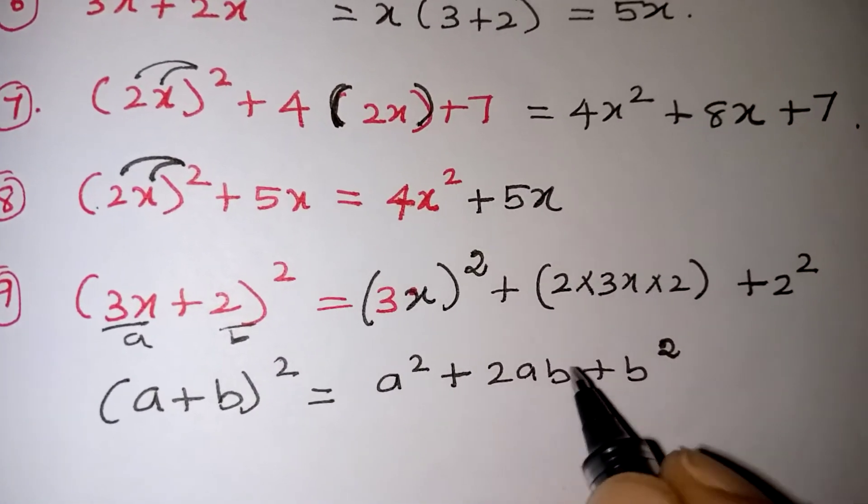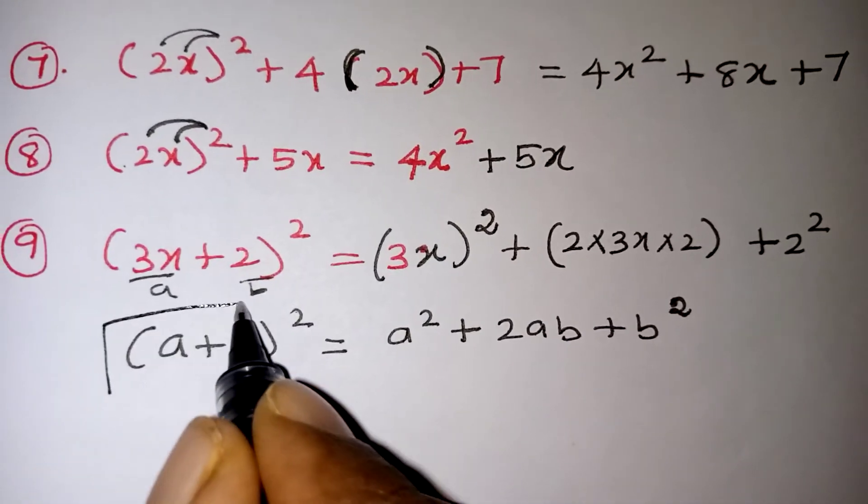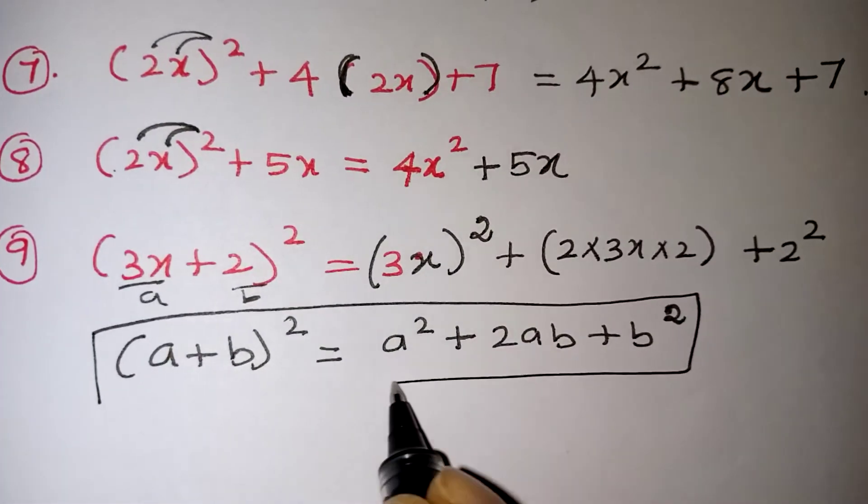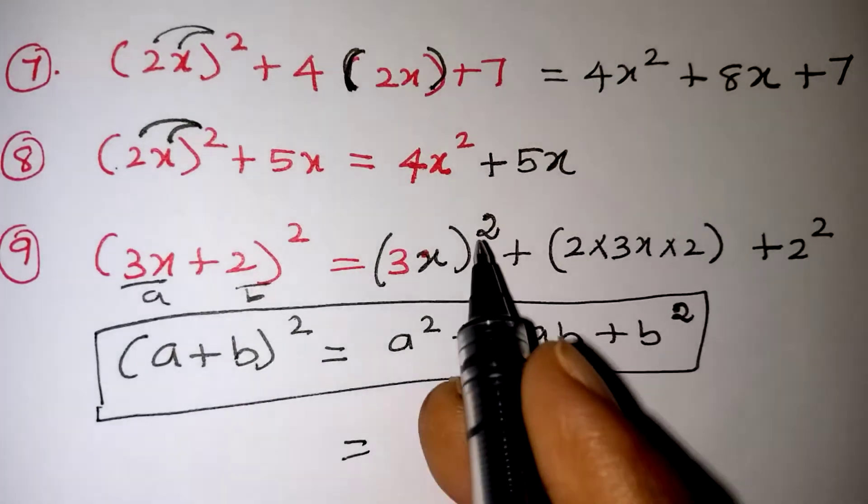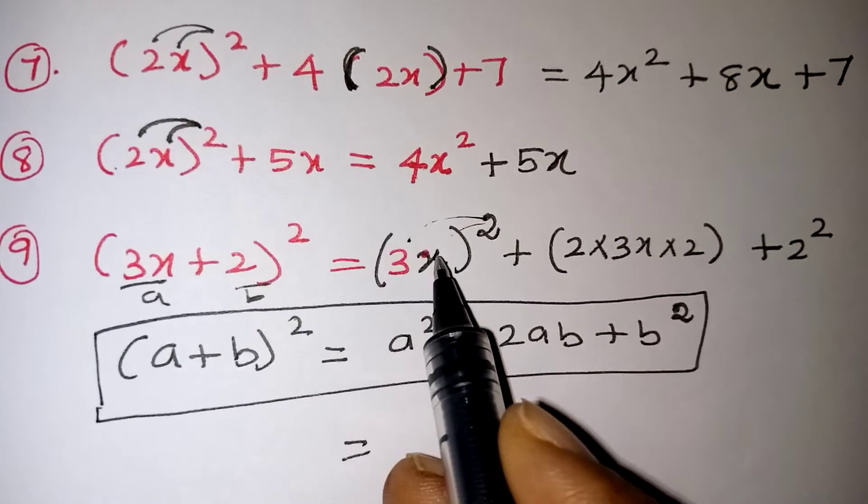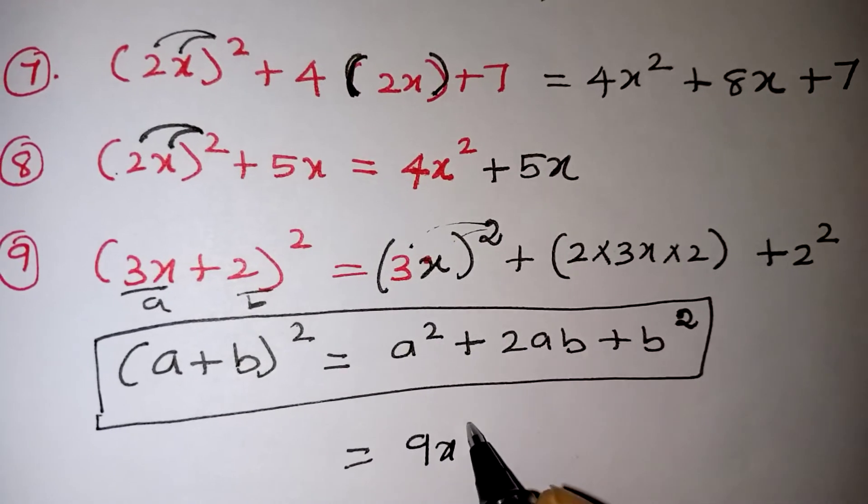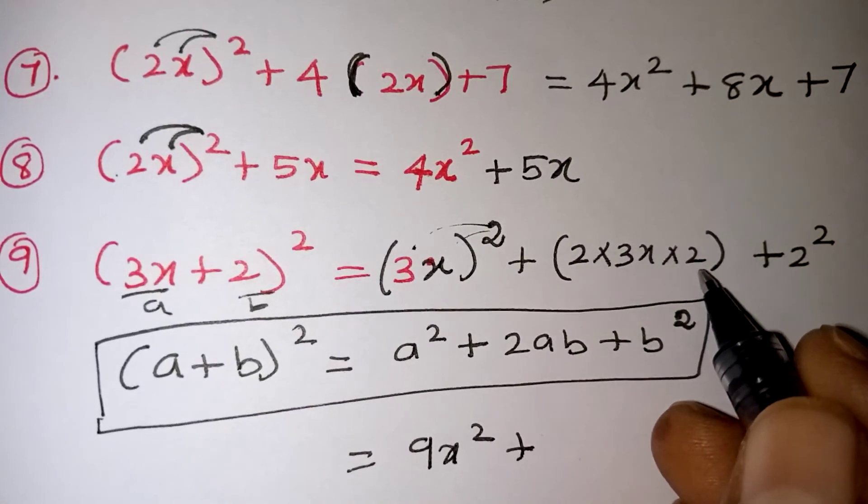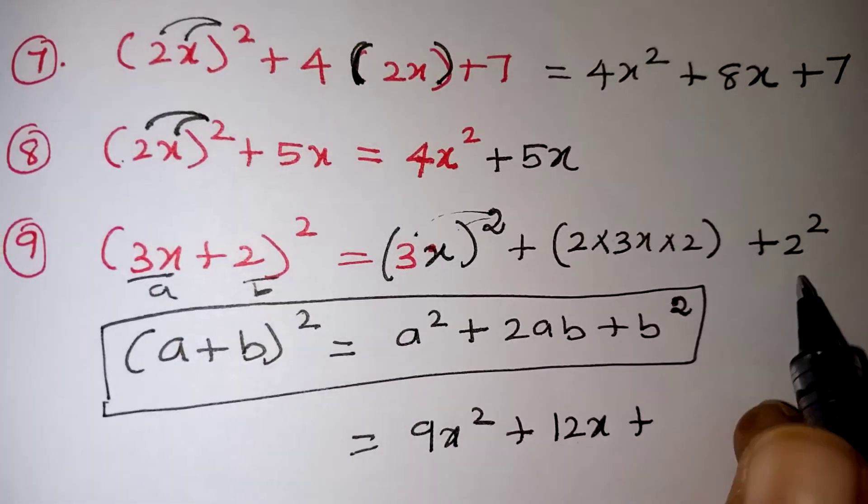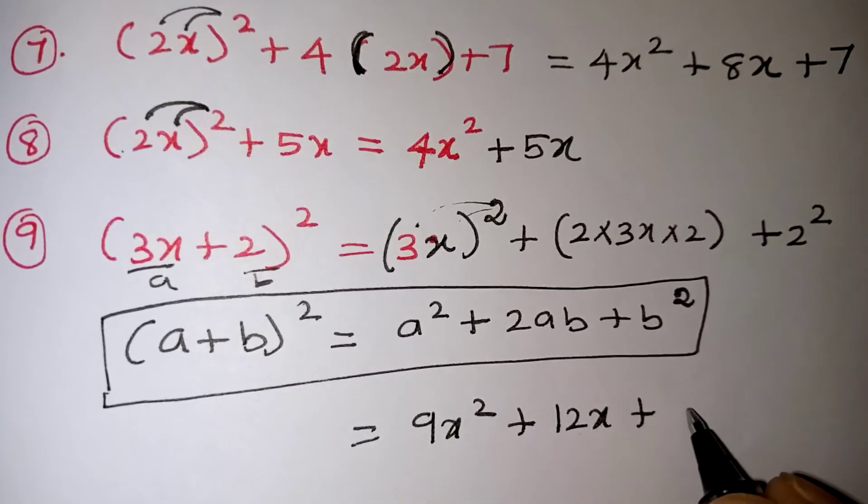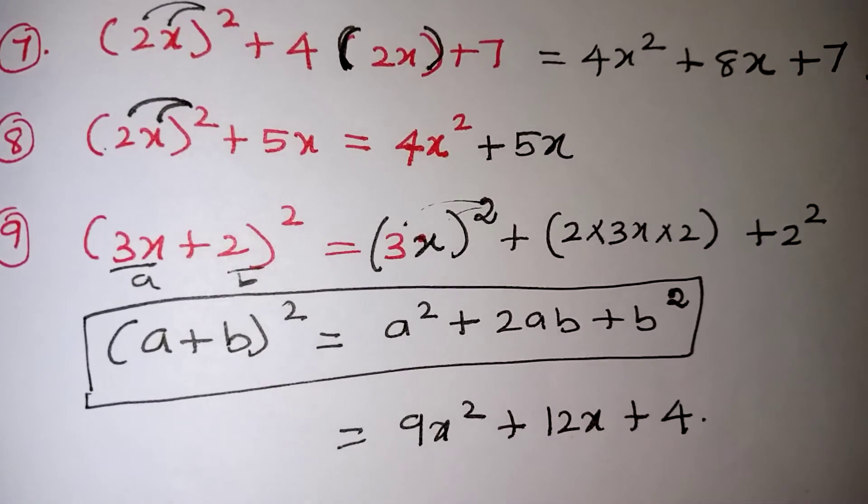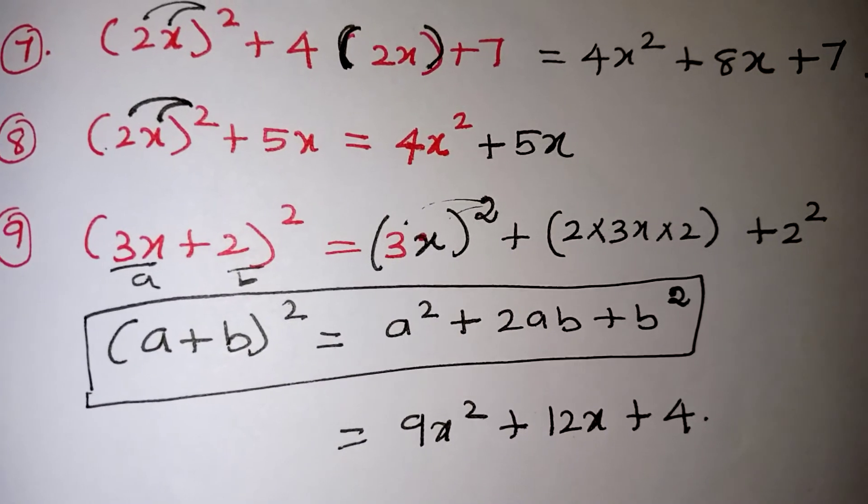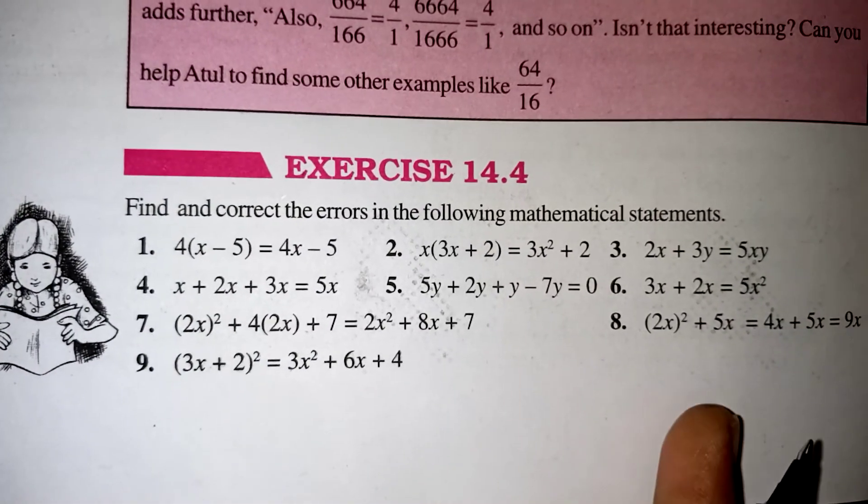Now just a simplification value. According to this formula only we have expanded. Now the final answer is the square is common for the 3 as well as for the x. So 9x squared plus 2 times 3 is 6, 6 times 2 is 12, 12x plus when you are squaring the 2, 2 times 2 is it will be 4. This is your correct answer. This is how we have to correct the statement.